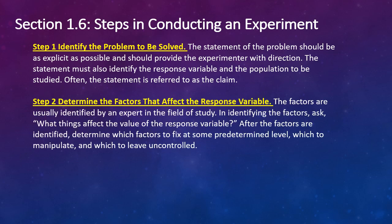Step two is determine the factors that you believe affect the response variable. The factors are usually identified by an expert in the field of study. In identifying the factors, ask yourself what things affect the value of the response variable. Is it age? Is it race? Is it income? It could be a myriad of things. After the factors are identified, determine which factors to fix at some predetermined level, which to manipulate and which to leave uncontrolled.